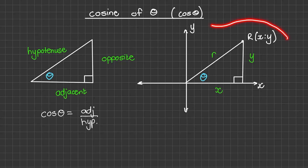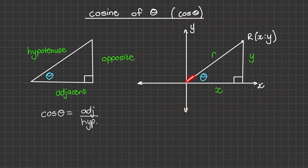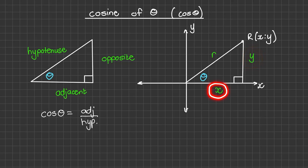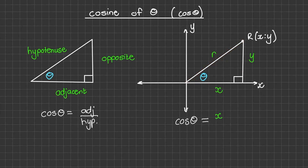Normally we use a Cartesian plane and we represent theta in the first quadrant. The opposite side is represented by y, the adjacent side by x, and the hypotenuse by r. But cosine of theta is still the length of the adjacent side divided by the length of the hypotenuse side, so in this example it is x over r.